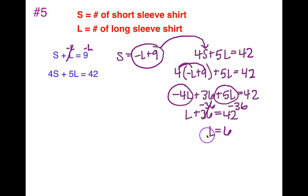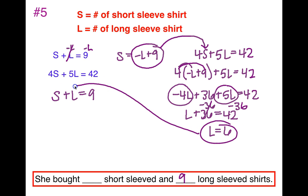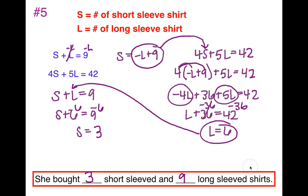L represents the number of long-sleeved shirts. Plugging L = 6 back into S + L = 9: S + 6 = 9, so S = 3. Since S represents short-sleeved shirts, she bought 3 short-sleeved and 6 long-sleeved shirts.